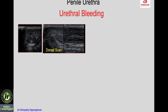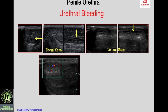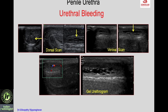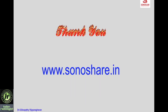Another case of urethral bleeding: the axial scan shows the two corpora cavernosa and corpus spongiosum with multiple cystic areas in the corpus spongiosum. On the longitudinal scan, linear tubular structures are seen, which on gel urethrogram from the ventral aspect confirmed the same finding — color Doppler showed flow, indicating hemangioma. The gel urethrogram better demonstrates the urethra and the hemangioma of the walls, which caused urethral bleeding.